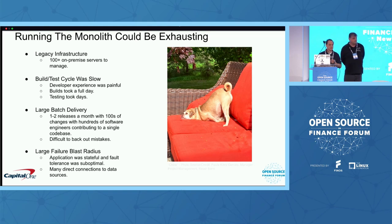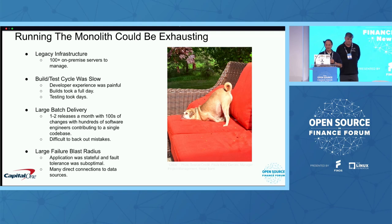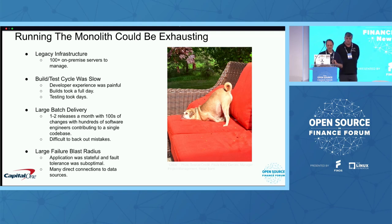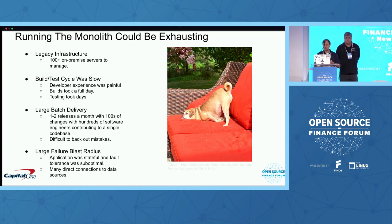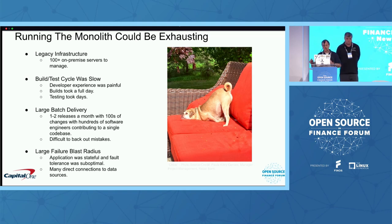It took several days to test, and if something went wrong, you'd have to start the whole thing over again. This led to some very large batch delivery — one to two releases a month, with hundreds of changes put in by hundreds of software engineers, all contributing to that single monolithic code base.